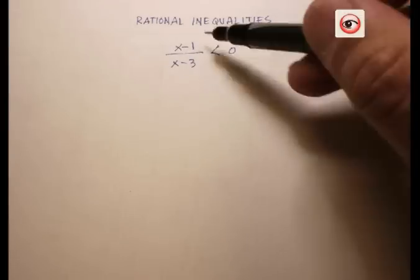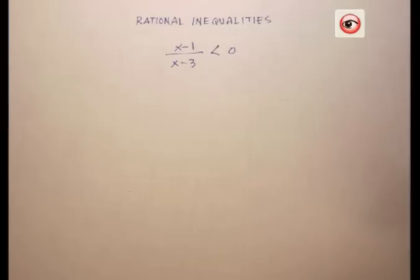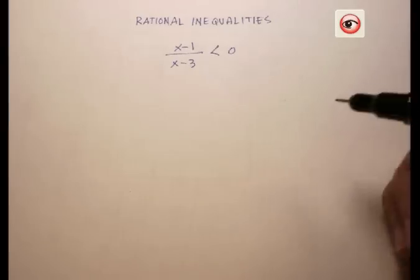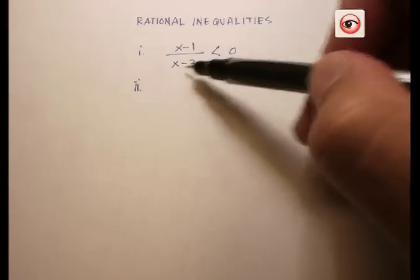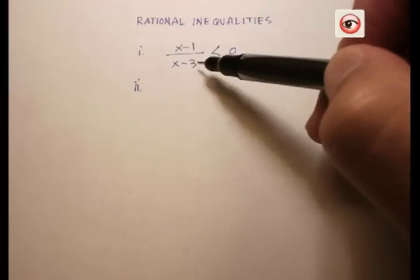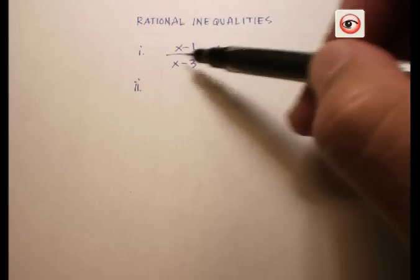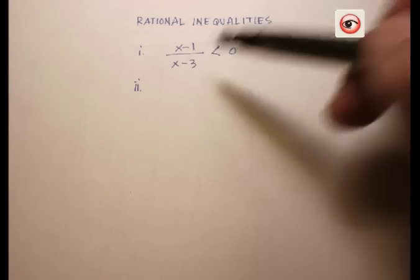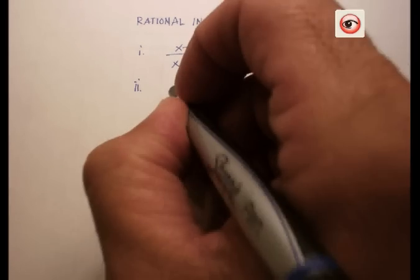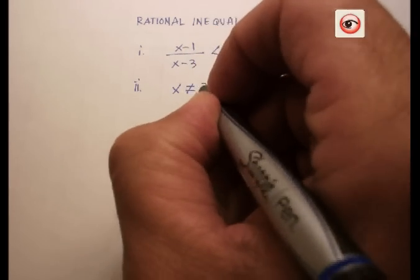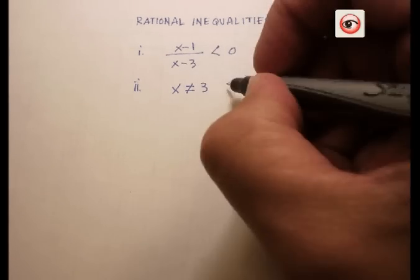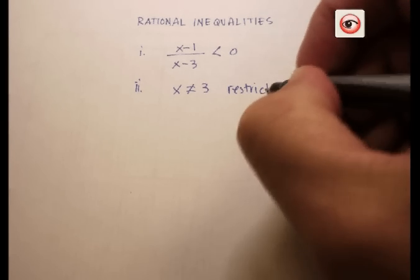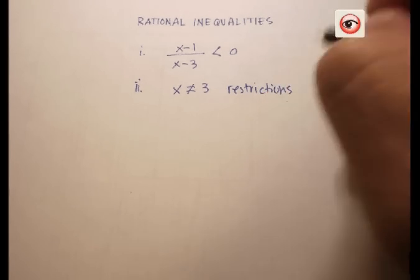How do we start solving this? Just like any fraction that has a variable in the denominator, you want to find the restrictions. Find out what we cannot have for an answer because that would make the denominator equal to zero. By eyeballing this, X cannot equal three because if X equals three, I'm dividing by zero. We call this one of our restrictions - X cannot equal three no matter what other answer we find.